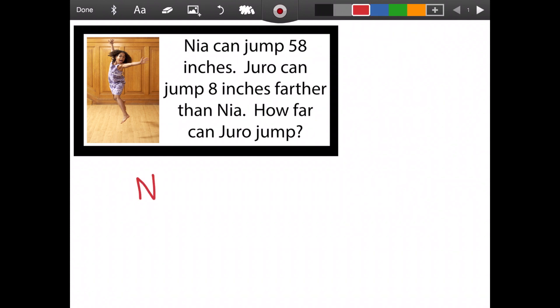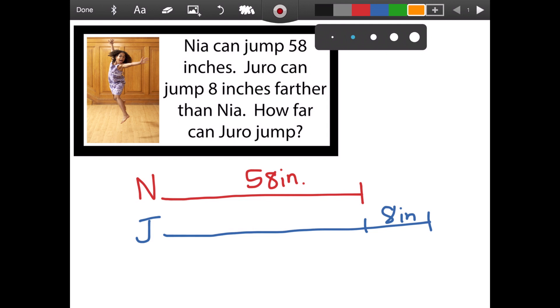And now we have Nia. We're gonna do her jump of 58 inches. Now it's important to label it so we know it's inches. And I'm gonna do the IN to label that. Now Juro can jump eight inches farther than Nia. So Juro, Nia's going farther. And we know that is eight inches farther. So we want to know how far can Juro jump. So we want to know all of this.